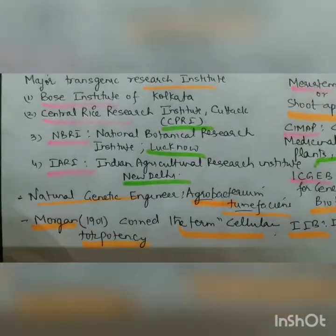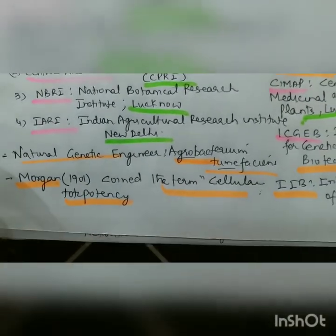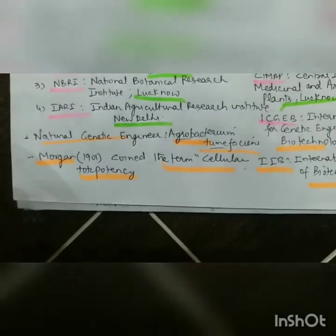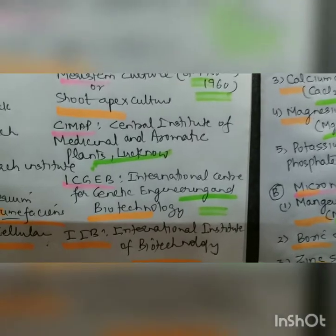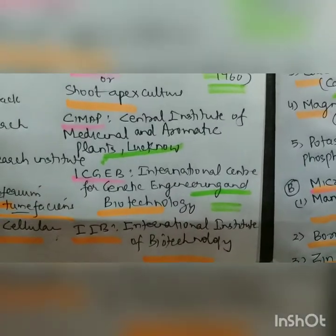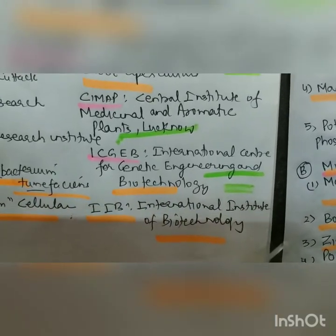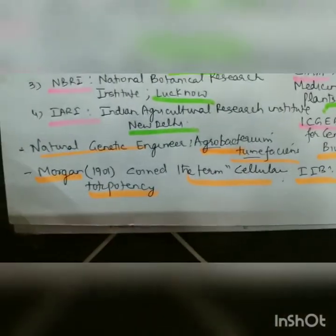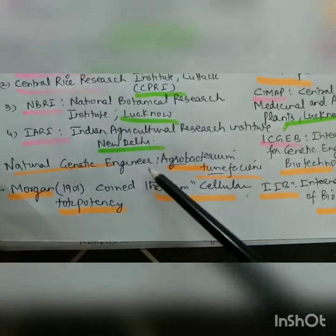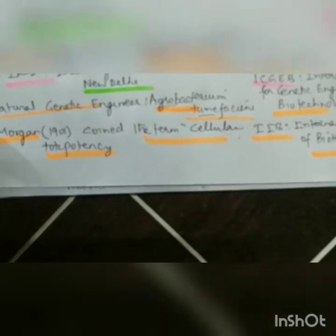NBRI stands for National Botanical Research Institute, Lucknow. Then we have IARI — Indian Agricultural Research Institute, Delhi. Besides that, CIMAP stands for Central Institute of Medicinal and Aromatic Plants, Lucknow. Then ICGEB — International Centre for Genetic Engineering and Biotechnology — and IIB, the International Institute of Biotechnology. The natural genetic engineer that transfers genes from one plant to another is Agrobacterium tumefaciens.